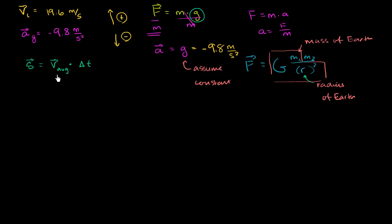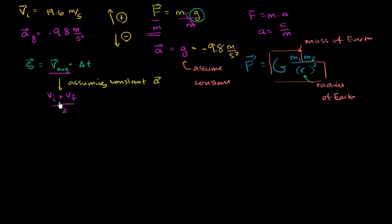We know that average velocity equals initial velocity plus final velocity divided by 2, assuming constant acceleration. When we're not too far from the surface of the Earth we can make that assumption of constant acceleration. But we don't yet have our final velocity, so we need to think about this further.